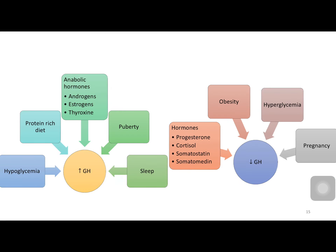The factors which increase growth hormone release are hypoglycemia, protein-rich diet, anabolic hormones like androgens, estrogens and thyroxin, puberty, and sleep. Growth hormone is inhibited by progesterone, cortisol, somatostatin, somatomedin, obesity, hyperglycemia, and pregnancy.